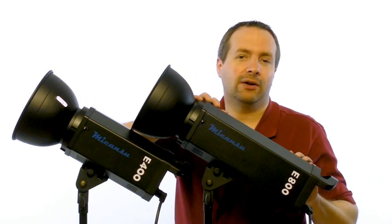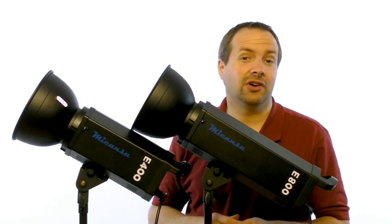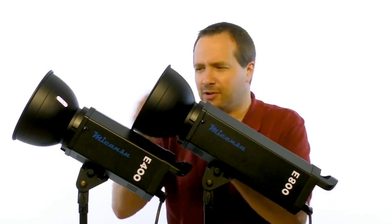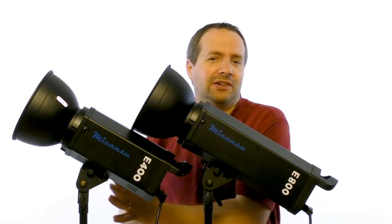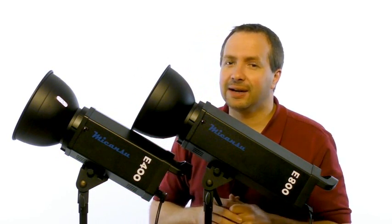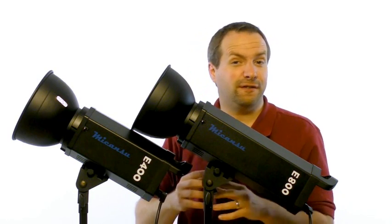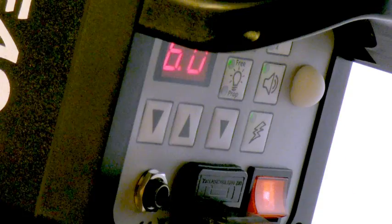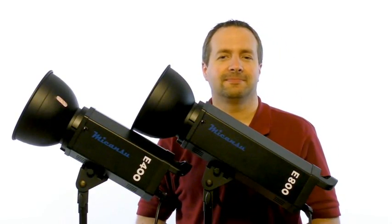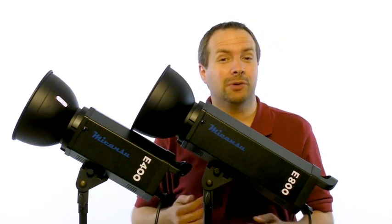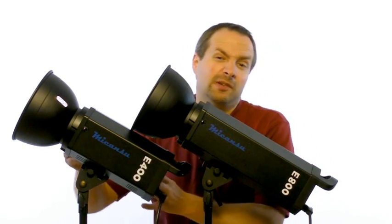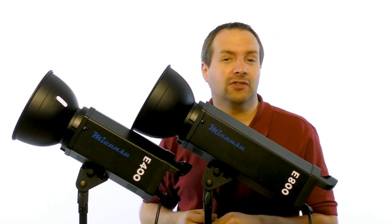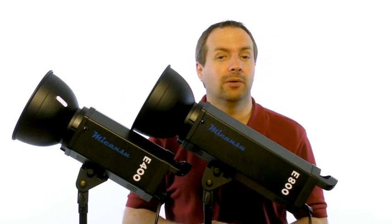Because this is a more powerful flash you'd imagine it would take longer to recharge. And you're pretty much right it does. But they're both very quick. How much difference is there between an 800 and a 400 watt second lamp? Well let's test it and find out. Both of these lights are turned on to their full output. Let's fire them and listen for the beeps when they're ready to fire again. So as you can see there's not much difference between the two. The E400 was about a second and a half. The E800 was about two seconds. Both of them very fast to recycle even on their full output power.